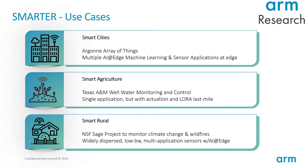Another example is the smart rural project that monitors climate change, wildfires, and other natural calamities in rural lands. All of these use cases are made possible through the SMARTER project's deployable reference designs that help to securely deploy machine learning onto edge devices. This also includes managing the edge device and the data that the edge device generates.